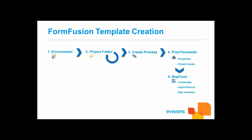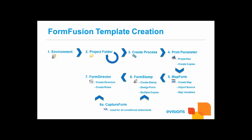The text is then mapped to variables using floating or offset fields. The next object created in the print parameter is a form stamp, where the final form is designed. After that, a form director is created — where the finished form will be distributed. We also have the capture form component that allows conditional printing, covered in the advanced training. Conveniently, when we download a template from the Evisions Co-op Share, the template will have all necessary components and only minor changes should be needed.